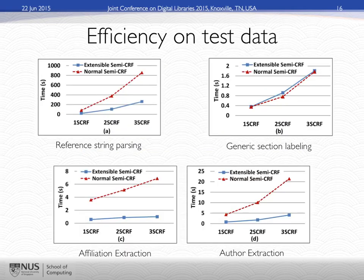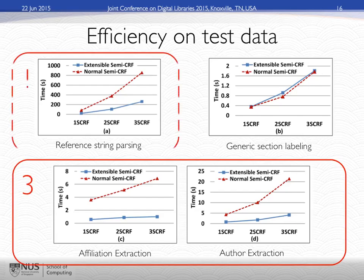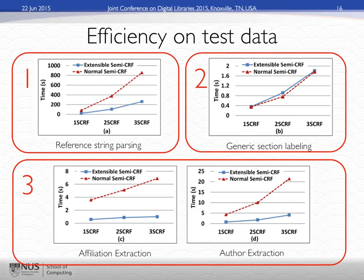Because it's close to lunchtime, let me talk about speedups. There are three different tasks, and you can see the one with generic section labeling doesn't benefit much from extensibility. That's because the feature inventory for that task is fairly small, and there aren't that many unigram features. That's why you don't see much performance speedup there.